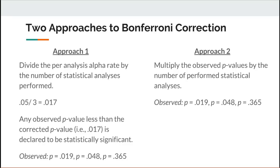I multiply those observed p-values by the number of analyses conducted. The Bonferroni-corrected p-values would equal 0.057, 0.144, and — for the last one — the multiplication of 0.365 by 3 yields a value larger than 1.0, so by convention it's reduced to 0.999, since it's not statistically possible for a probability to exceed 100%.